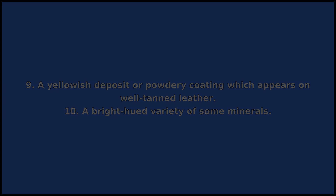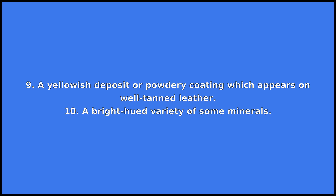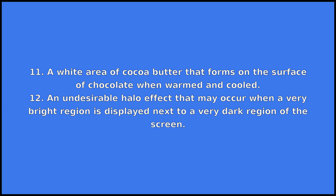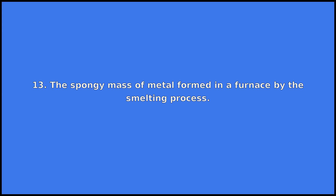Seven, anything giving an appearance of attractive freshness. Eight, the clouded appearance which varnish sometimes takes upon the surface of a picture. Nine, a yellowish deposit or powdery coating which appears on well-tanned leather. Ten, a bright-hued variety of some minerals. Eleven, a white area of cocoa butter that forms on the surface of chocolate when warmed and cooled. Twelve, an undesirable halo effect that may occur when a very bright region is displayed next to a very dark region of the screen. Thirteen, the spongy mass of metal formed in a furnace by the smelting process.